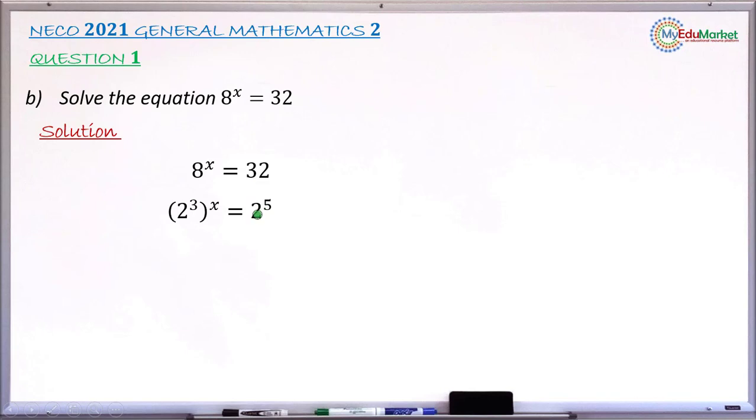We continue. Next is to multiply these two powers according to the law of indices. So you now have 3 times x, which gives 3x. So you now have 2 raised to the power of 3x equals 2 raised to the power of 5.